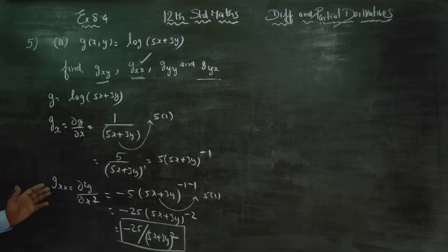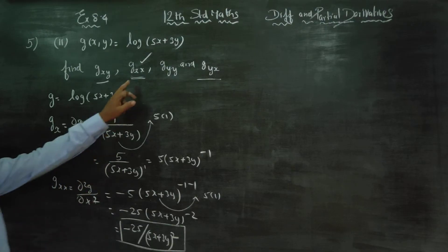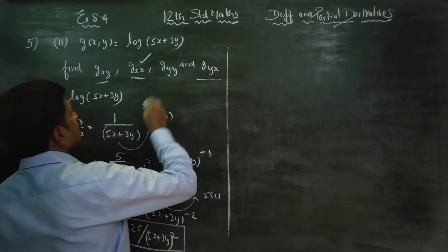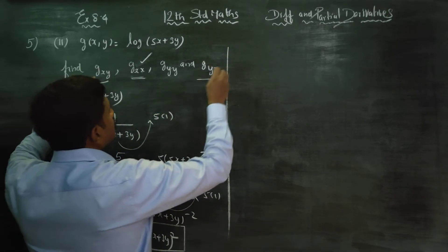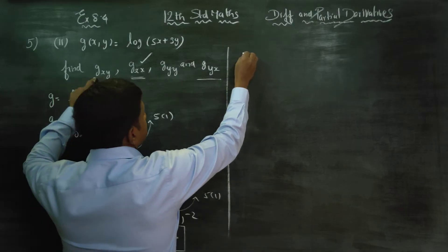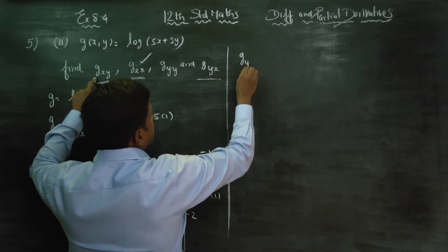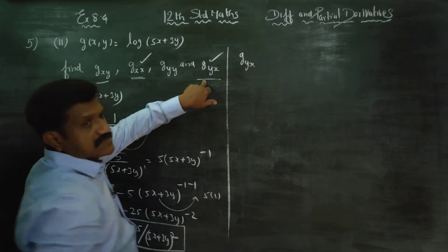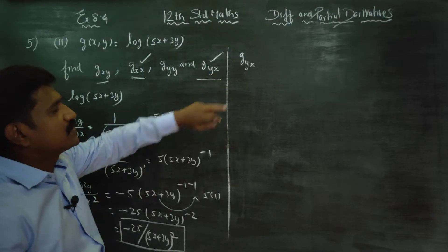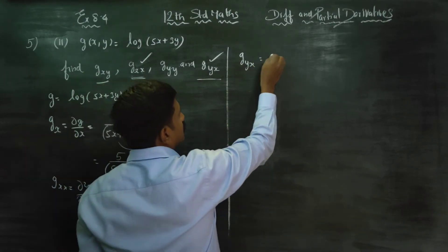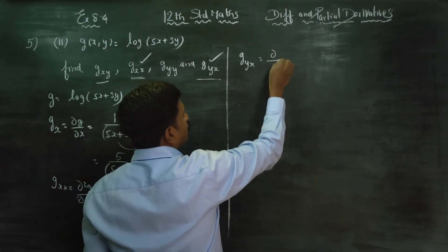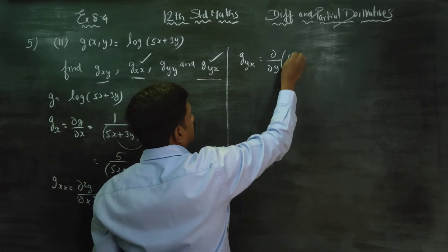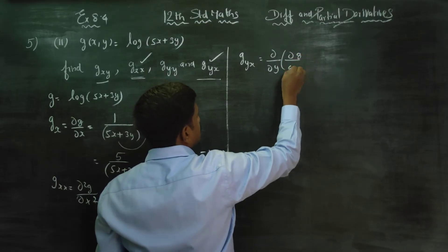The first part is gxx. Next I am moving to gyx. What is the meaning of gyx? It means ∂/∂y of (∂g/∂x).